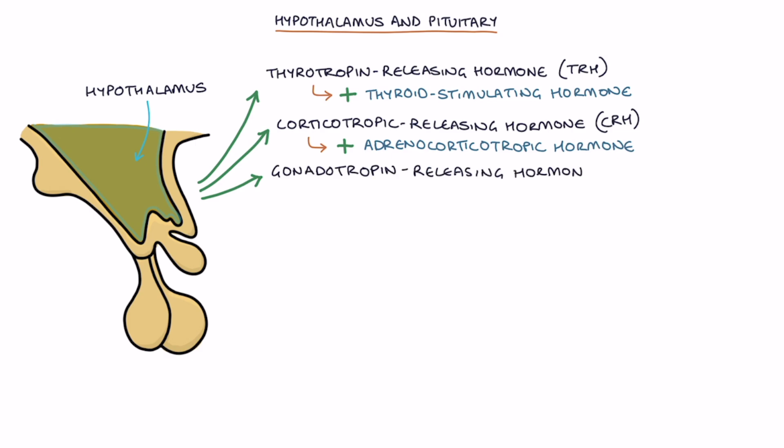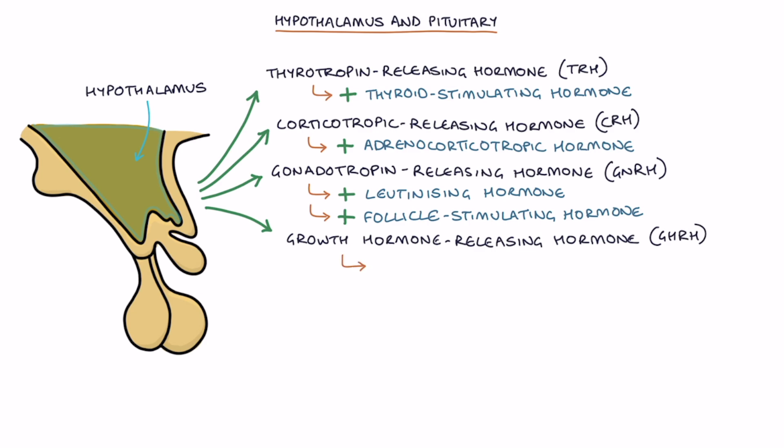Gonadotropin-releasing hormone or GnRH which stimulates luteinizing hormone and follicle-stimulating hormone secretion by the pituitary. Growth hormone-releasing hormone or GHRH which stimulates growth hormone secretion by the pituitary.